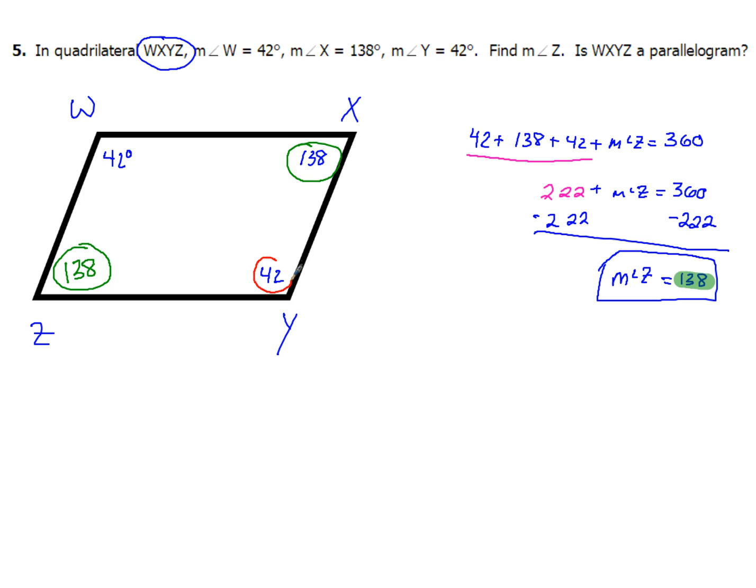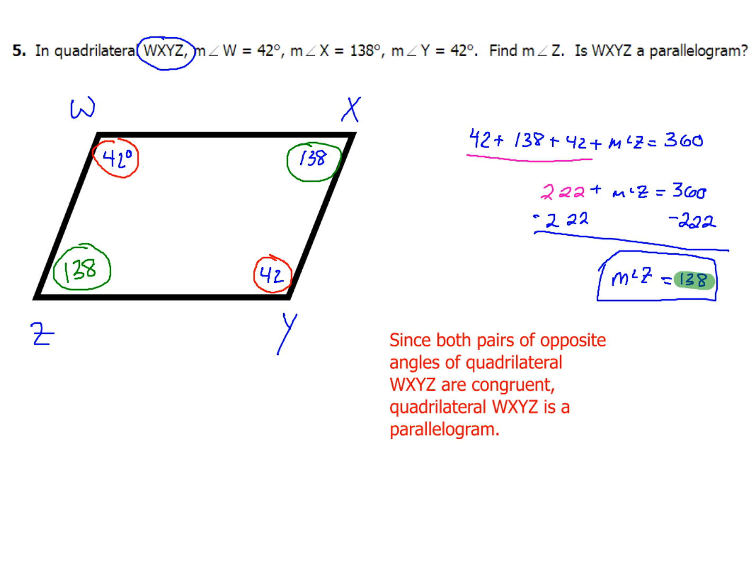And then this angle, 42 for Y, and 42 for W — they're opposite angles, and they're congruent also. So which one of my four reasons can I use to say that quadrilateral WXYZ is a parallelogram? Write yourself a sentence: since both pairs of opposite angles of quadrilateral WXYZ are congruent, quadrilateral WXYZ is a parallelogram.